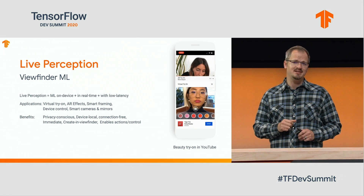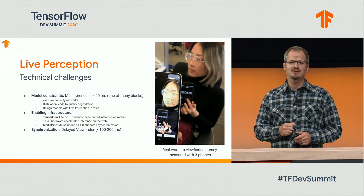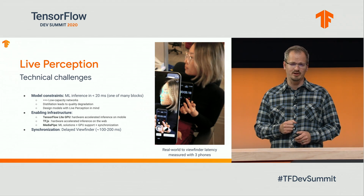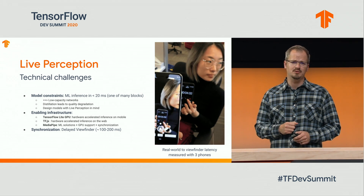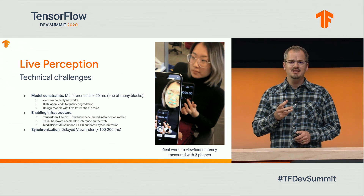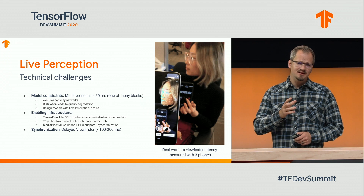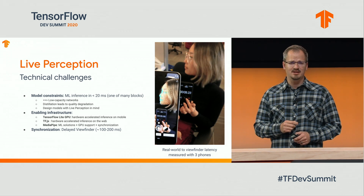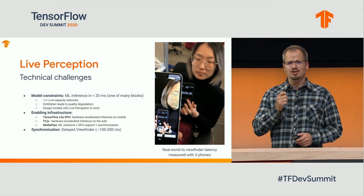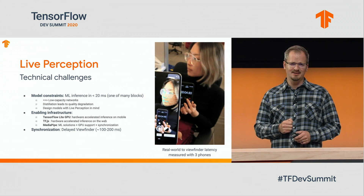So this sounds great, but what are the technical challenges? Well, if you want to run machine learning in the viewfinder, you really only have a budget of something like 20 milliseconds per frame, because usually you also want to run additional stuff like rendering on top of that. And that means you are constrained to low-capacity networks. Classical approaches like distillation tend to lead to low-quality results.